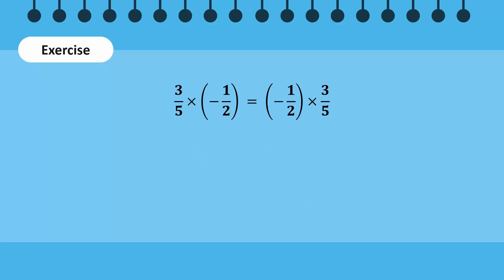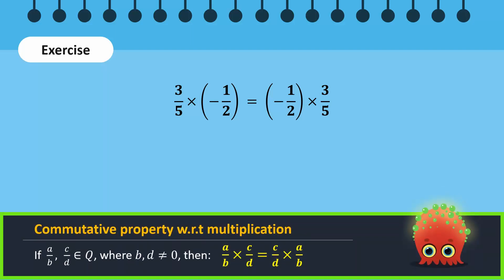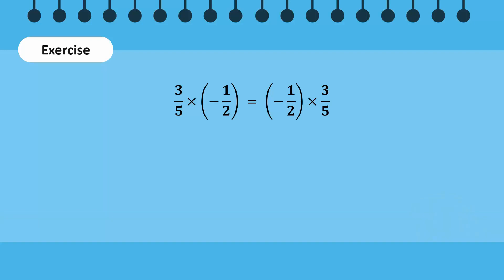Finally, we will verify the commutative property with respect to multiplication by ensuring that the left-hand side and the right-hand side of the equation are the same. 3 over 5 times minus 1 over 2 is equal to minus 3 over 10. Minus 1 over 2 times 3 over 5 is equal to minus 3 over 10. As the left-hand side equals the right-hand side, the commutative property with respect to multiplication of rational numbers has therefore been verified.